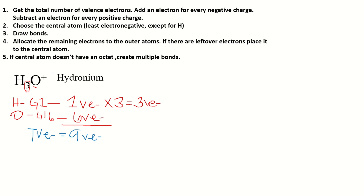Next step: add an electron for every negative charge, subtract an electron for every positive charge. We have a positive sign here, so we subtract 1. That gives us 9 minus 1 — we have 8 valence electrons. This will be our total number of valence electrons.